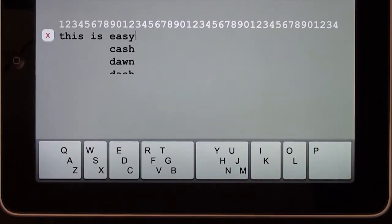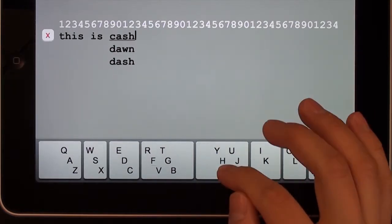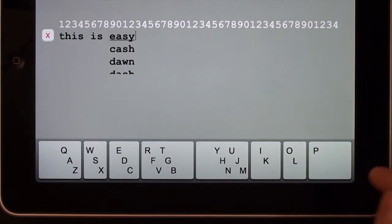If the word is not first in the disambiguated list, the user simply flicks up and down to select a different word. Flicks can happen anywhere in the keyboard.